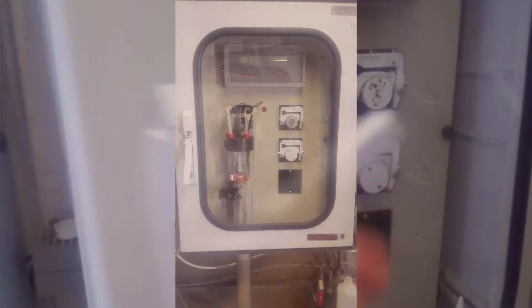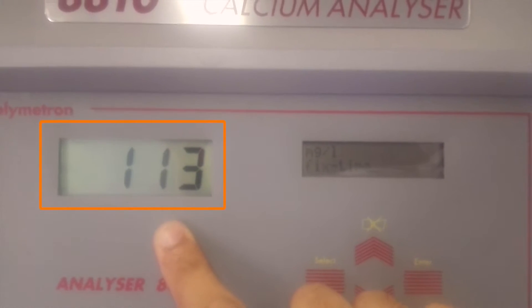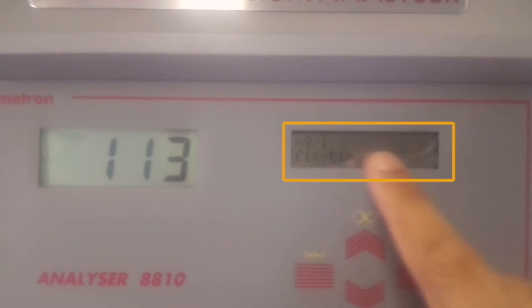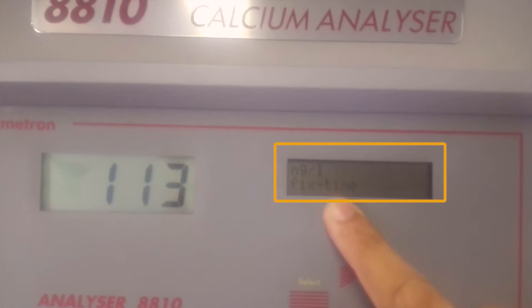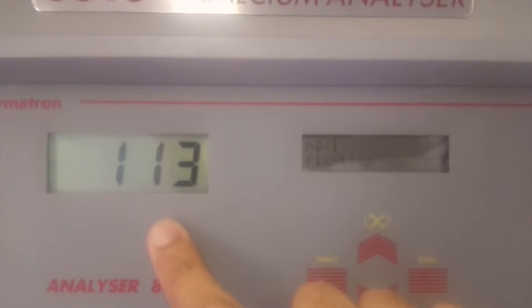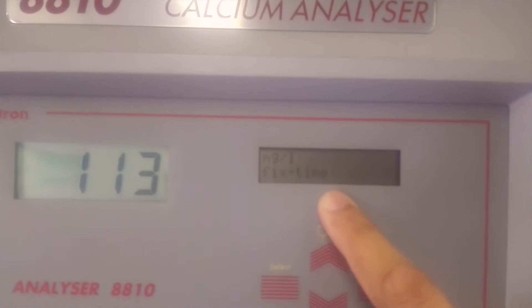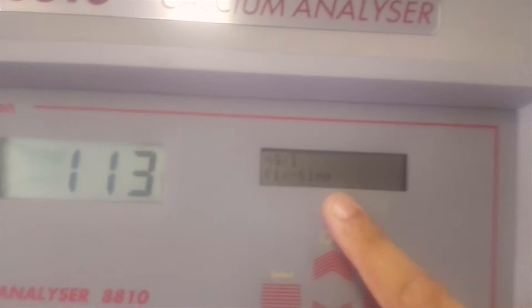This is the analyzer cabinet. Inside the cabinet is an electronic controller with dual display: one for reading and second for analyzer menu and status display. Currently, the value display is showing the last titration result. The menu display is showing the unit of concentration.